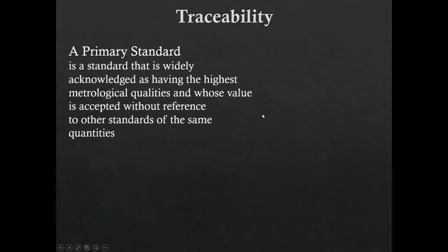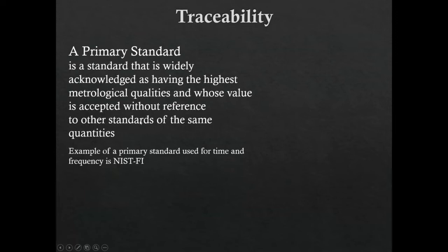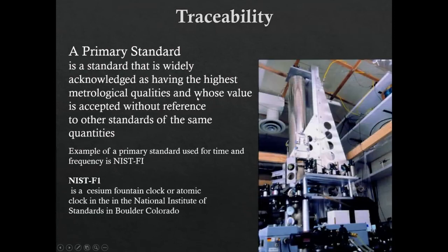A primary standard is one widely acknowledged as having the highest metrological qualities, whose value is accepted without reference to other standards of the same quantity. Whether it's temperature, pressure, mass, or time, the primary standard is the top of the pyramid. An example for time and frequency is the NIST-F1 standard — a cesium atomic clock residing in Colorado. Time isn't something we generally calibrate for directly, but many things we measure are relative to time, so it has a standard as do most other measurements.